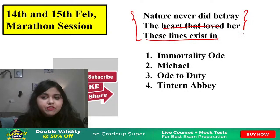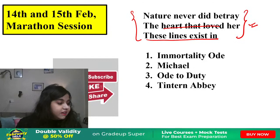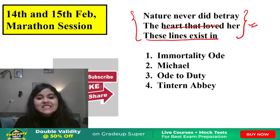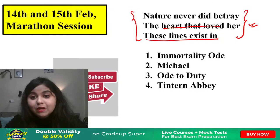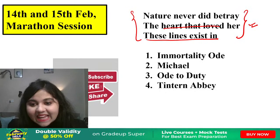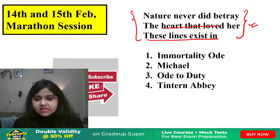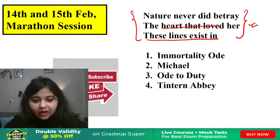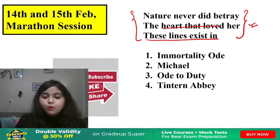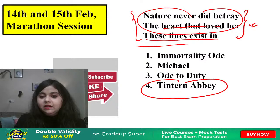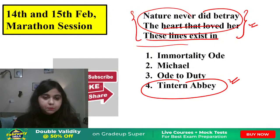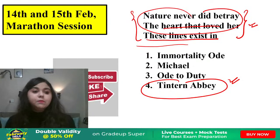How many parts are there in the Prelude? We discussed this yesterday - there are 14 parts of the Prelude. The Prelude is a spiritual autobiography; its subtitle is 'The Growth of the Poet's Mind.' It was published by his wife in 1850. This is an autobiographical work written in blank verse. The 14 parts include: Introduction, School Time, Residence in Cambridge - and they've given you a direct question in your NET asking which university is mentioned in the Prelude.